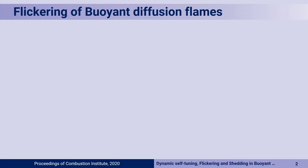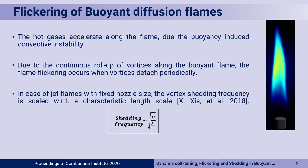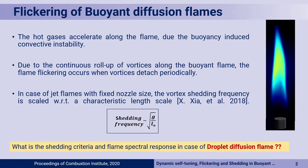The flickering of the buoyant diffusion flame has been studied quite a bit. There is the work of Zia et al., who found that the shedding frequency of such a buoyant diffusion flame basically scales as root over G by L0, where L0 is basically the size of the fuel source — it can be a nozzle or a porous sphere wetted with liquid. In most cases this fuel source is constant, so this length scale does not get altered. However, this is not the same in the case of a droplet diffusion flame, and here the flame spectral response and shedding criteria are quite different.